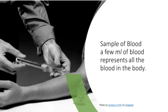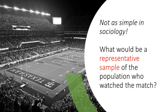All scientists use samples and sampling to carry out their work. Let us take the example of the doctor taking a sample of blood from a human body. He can just take a little bit of blood, a few millimeters from any part of the body, and that blood will represent all the blood in the body. But it is not so straightforward when it comes to a sample in the social sciences. Let us go back to the example of the stadium and ask ourselves what would be a representative sample of the population who watched the match.